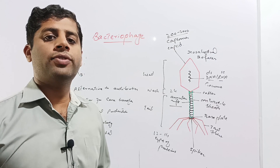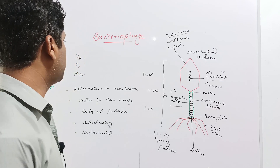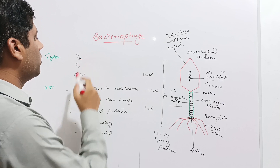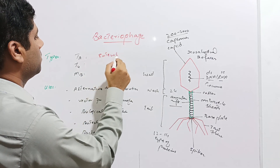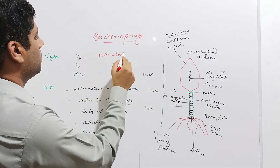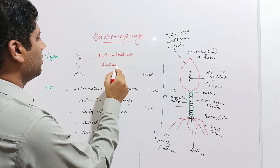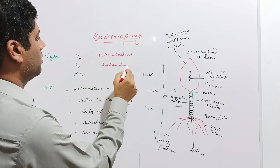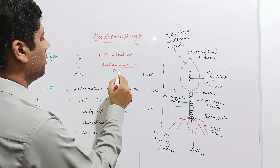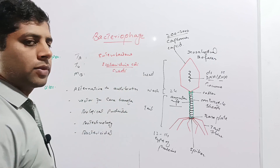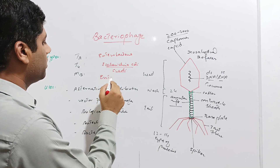Now the types of bacteriophage. There are lots of types, but these three are very important. The T2 phage, which infects enterobacteria. The T4 phage, which infects Escherichia coli, also called E. coli. And the M13 bacteriophage, which also infects enterobacteria.